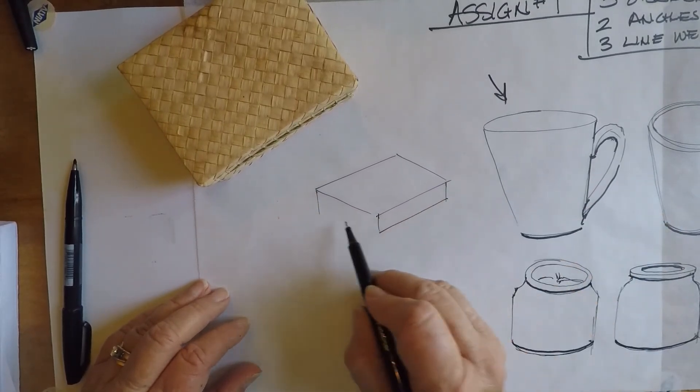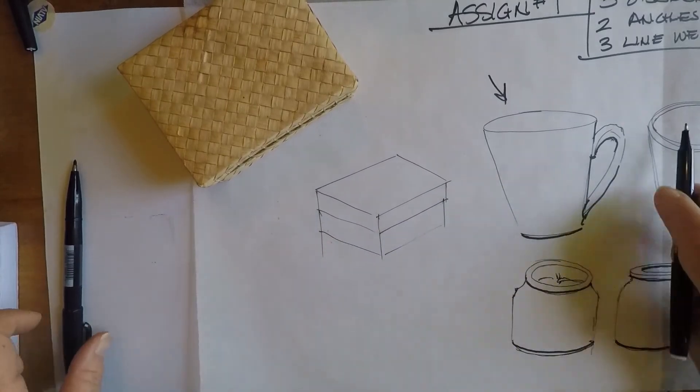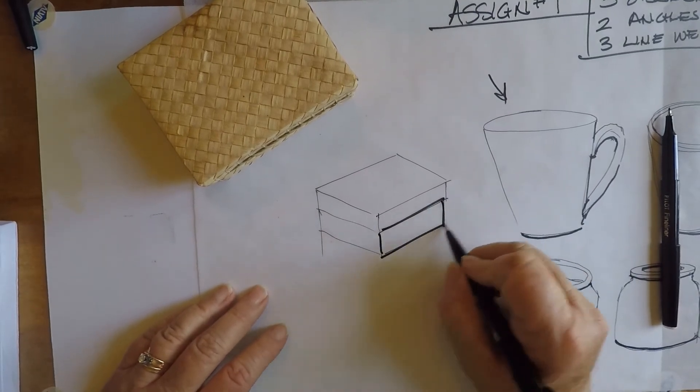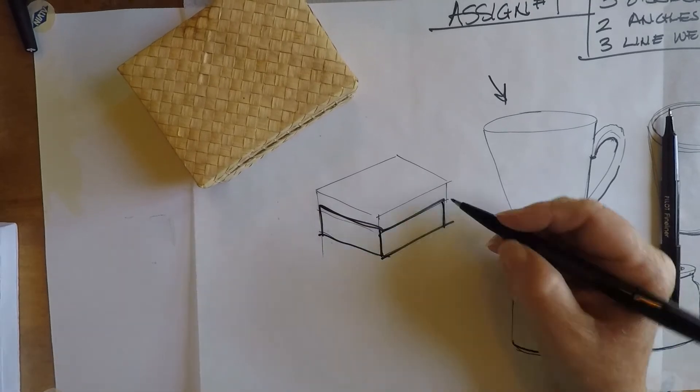And then here's the sides of the box, still using a light pressure. But now they want to reinforce, so they'll go like this, and they'll reinforce every line.